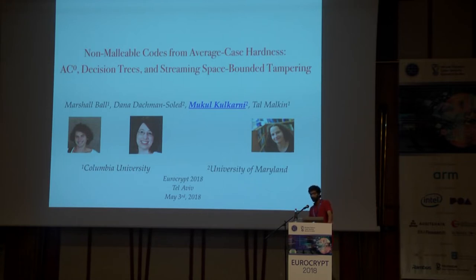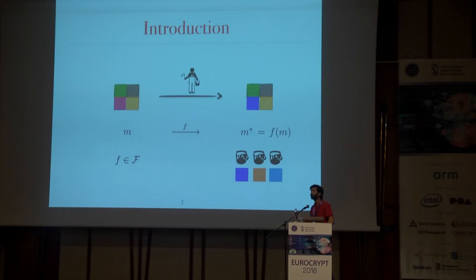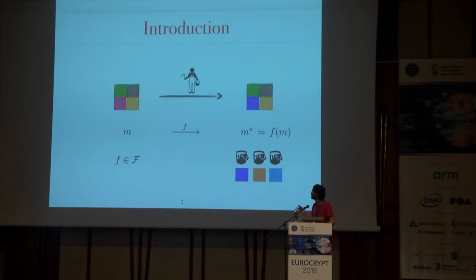Let's start with an example. Say you have a beautiful tile and want to send it to your friend, but there is a crazy painter on the street who arbitrarily paints it in some colour. What's received on the other end is an ugly tag. We can formalize this: we have a message M sent over an adversarial channel which applies a tampering function F, so what's received is the tampered message F of M. In general, the tampering function F comes from a class of functions, script F.